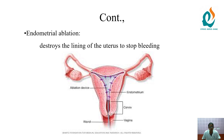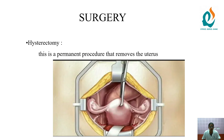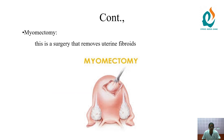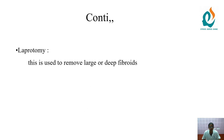In surgical management, the first one is hysterectomy — the permanent procedure that removes the uterus. The next one is myomectomy, a surgery to remove the uterine fibroids only. The next one is laparotomy, which is used to remove large or deep fibroids.